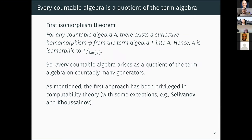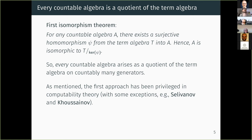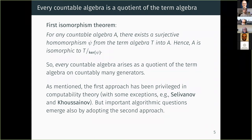The first approach has been privileged in computability theory, especially in computable structure theory and computable model theory, with some exceptions — think of the work of Selivanov and others on positive structures, or the line of research on C-structures. But basically, we start from the observation that many algorithmic problems appearing in algebra are already related to equivalence relations — they already have the form of equivalence relations.